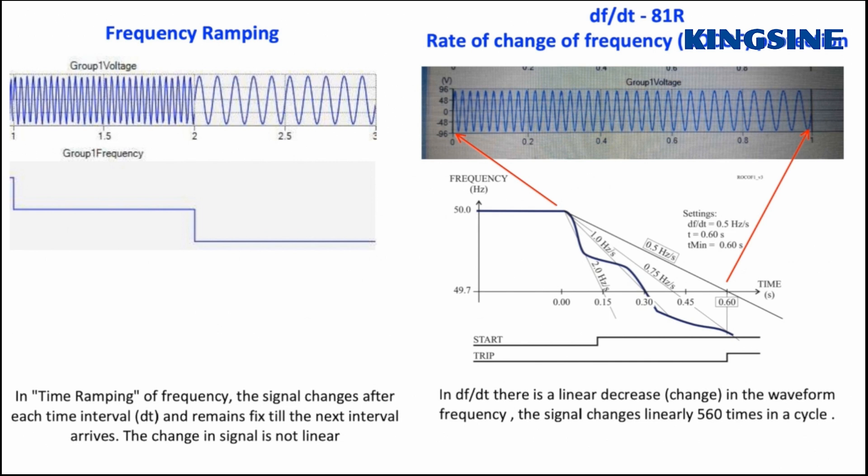As we can see, in both frequency ramping and DF by DT, the frequency of voltage signal is changing with respect to time. The only difference is that in frequency ramping, the rate of change is not linear. The signal changes after fixed time intervals and remains constant till the next interval. On the other side, in DF by DT, the signal changes linearly 560 times in a cycle.